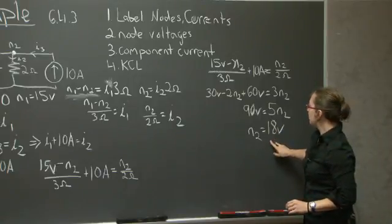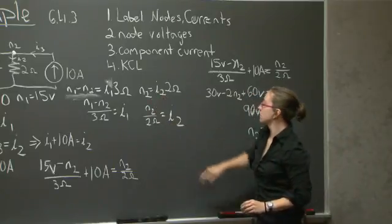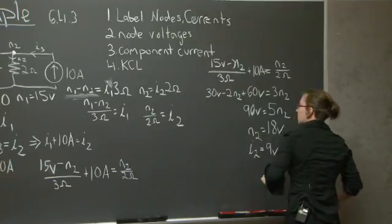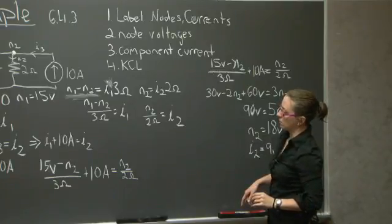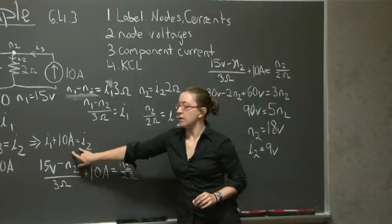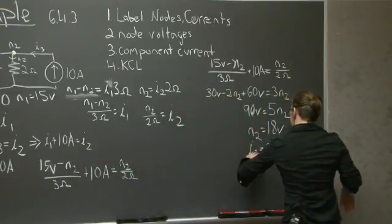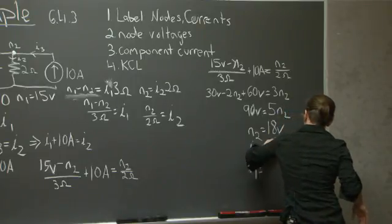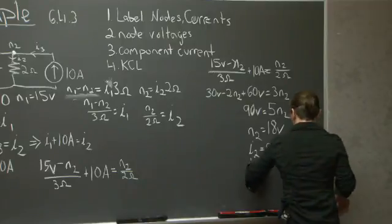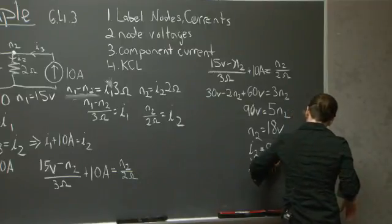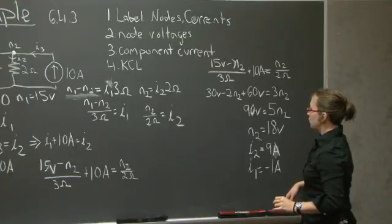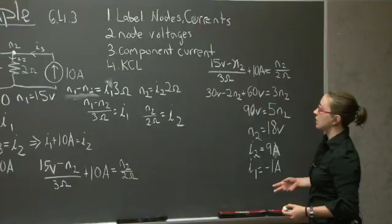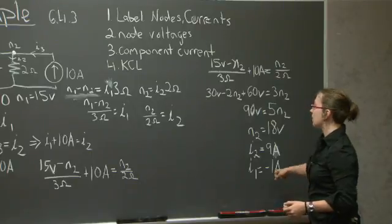At this point, I can solve for I2 and I1. What do I have left? I3 I know is 10 amperes. I0 is equal to I1, which is negative 1 amperes.